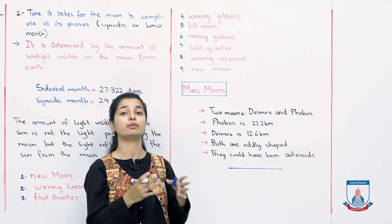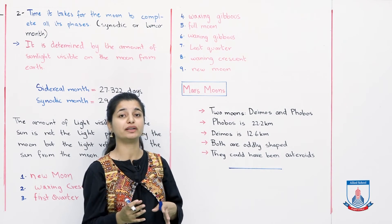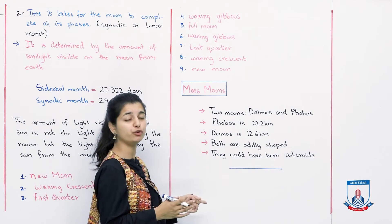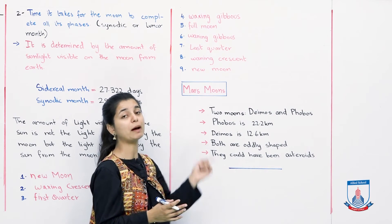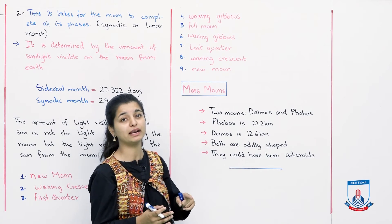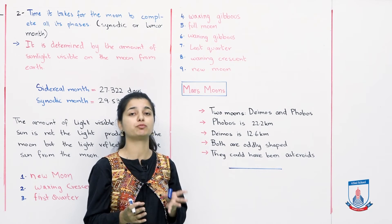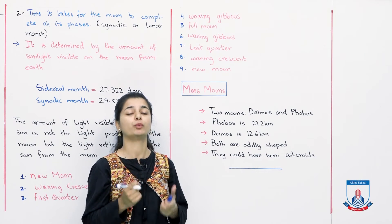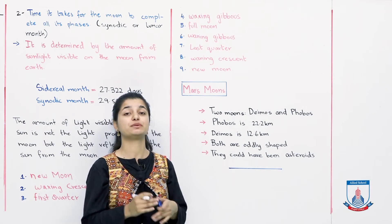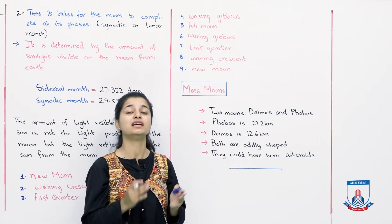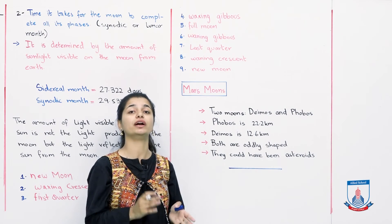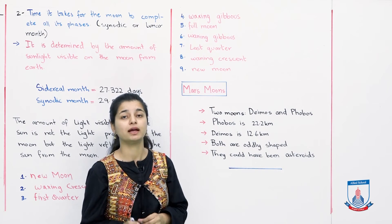Aur phir hum apna month jo hai woh is basis se calculate karte hain — that new moon se shuru ho ke, vaapas new moon pe aane tak moon ko kitna time lagta hai, which is approximately 29 days, as we just learned in a synodic aur lunar month.